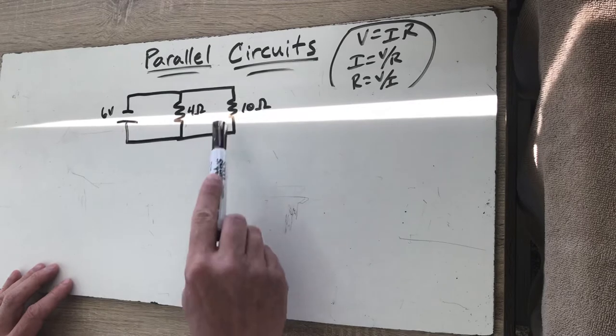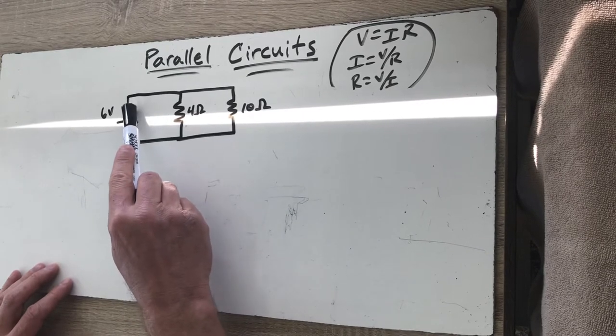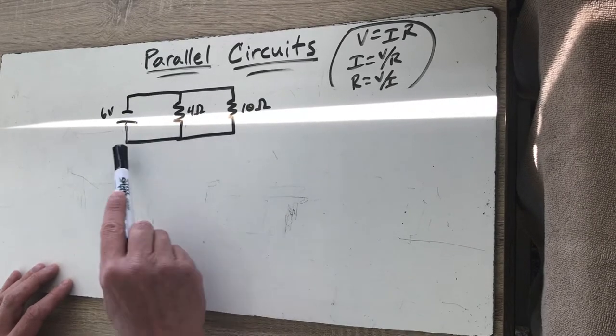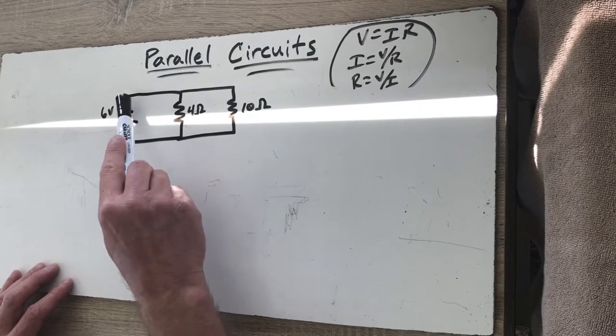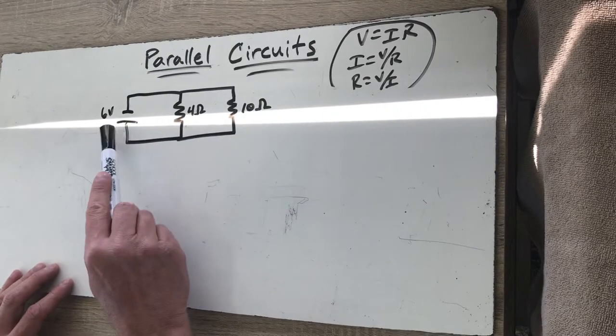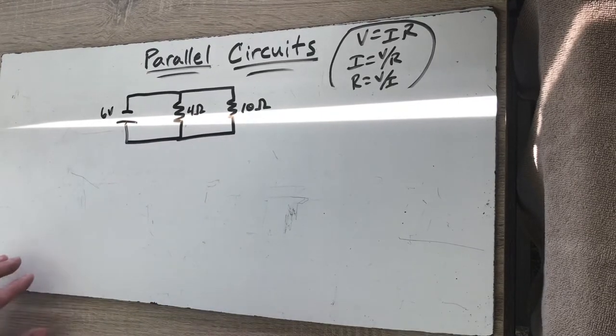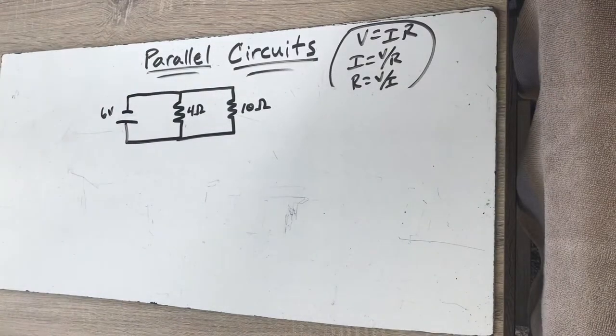Now we notice there are definitely two pathways. If electrical current is flowing from the battery, it can flow through this pathway to get back to the other side. It can also flow through this way. So there's more than one pathway, and this actually produces some very distinctly different things.